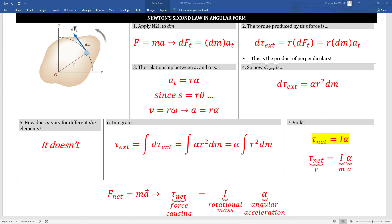Next section, Newton's second law in angular form. We all know about F equals MA. The counterpart to that is torque equals I-alpha. So F equals MA is analogous to torque equals I-alpha.